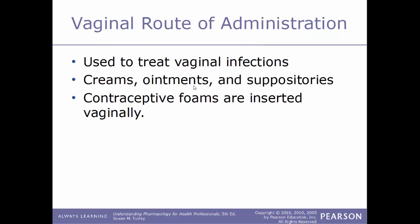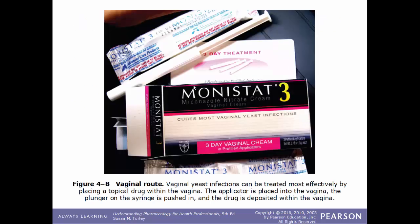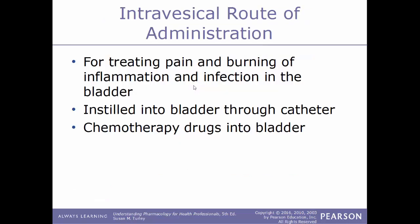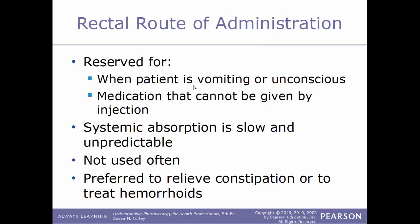The vaginal route is used to treat vaginal infections and can include creams, ointments, suppositories, or contraceptive foams. Common examples include Monistat for yeast infections. The intravesical route is used to treat pain, burning, inflammation, and infection within the urinary bladder. It is delivered through a catheter inserted into the bladder and can be used to deliver certain chemotherapy drugs to the bladder.